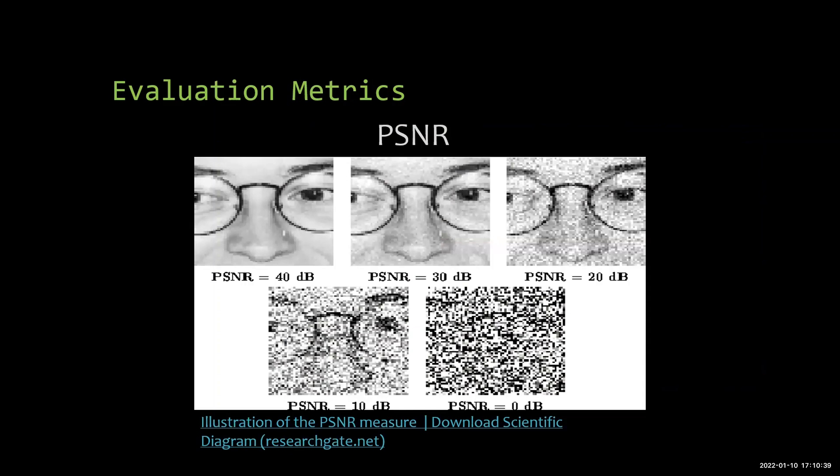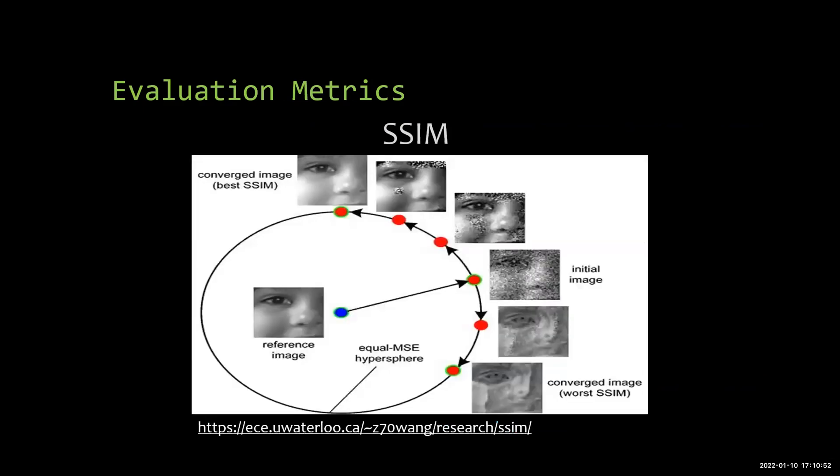For the evaluation metrics, I have used two metrics: the peak signal to noise ratio and the structural similarity index measure. Since the mean square error is not a good indicator for image quality, as we can see in this graph, all these images have the same MSE, but the SSIM measure is different. The worst one is this and the best SSIM is this one, which means it's very close to the original image. In this case, this is the original image.